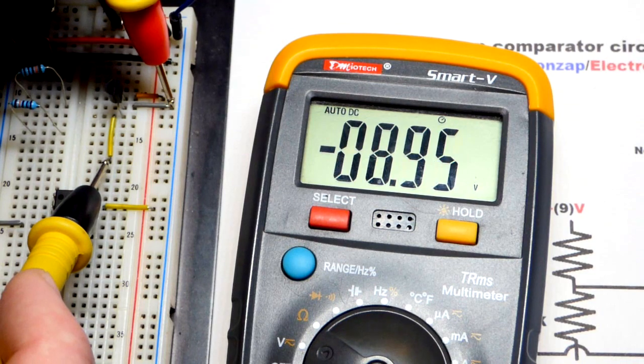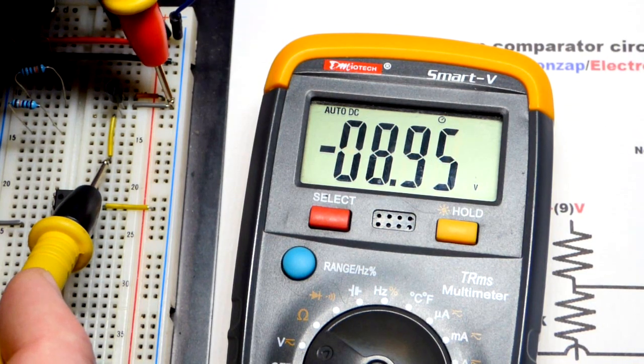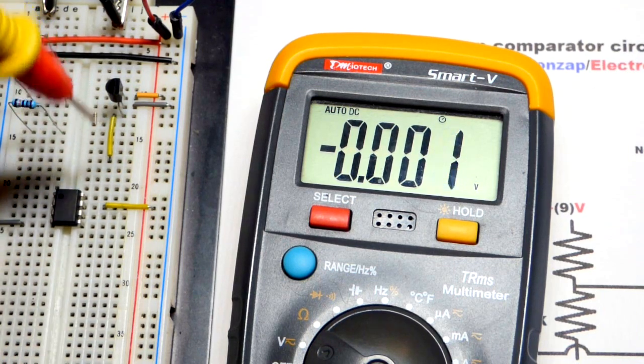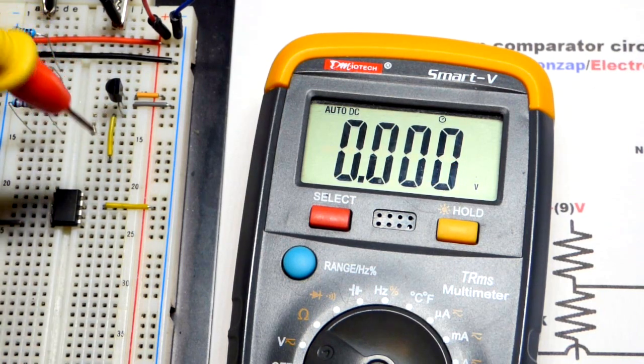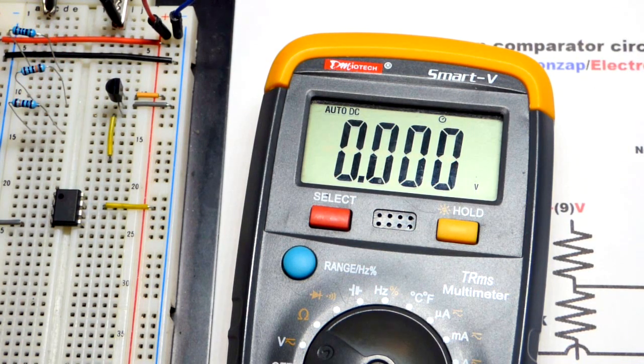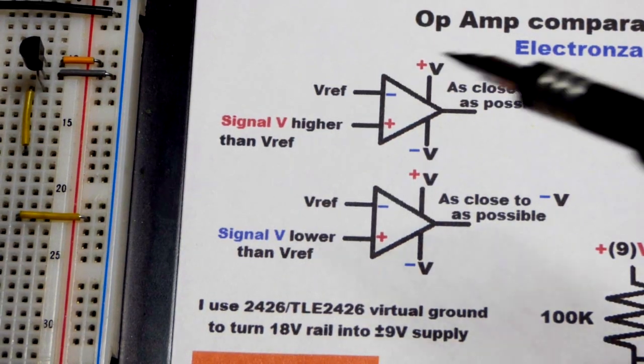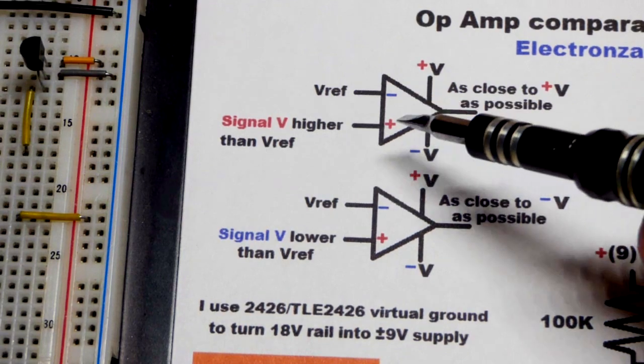At the common pin over there we have negative 9 volts. So that's in relationship to there. It's going to hold that halfway point really well, even with different loads.